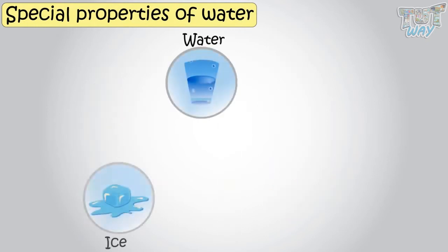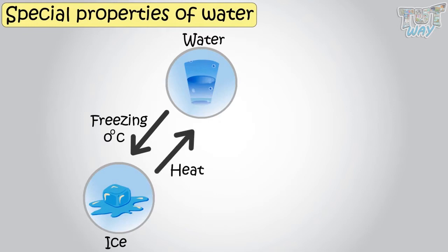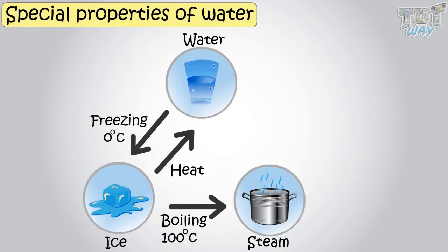Water changes to a solid form when we keep it in a freezer. Water changes to liquid form when we heat it. And if you further heat the water or you boil it, it starts changing into gas or it starts evaporating. That is the steam you see above the boiling water is the gaseous form of water.